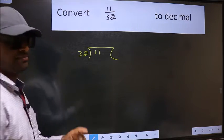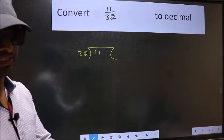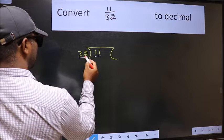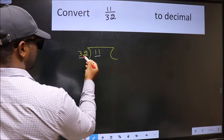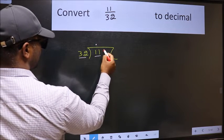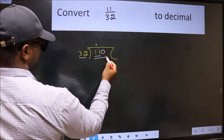This is your step 1. Next, here we have 11 and here 32. 11 is smaller than 32, so what we should do is put dot and take 0. So, 110.